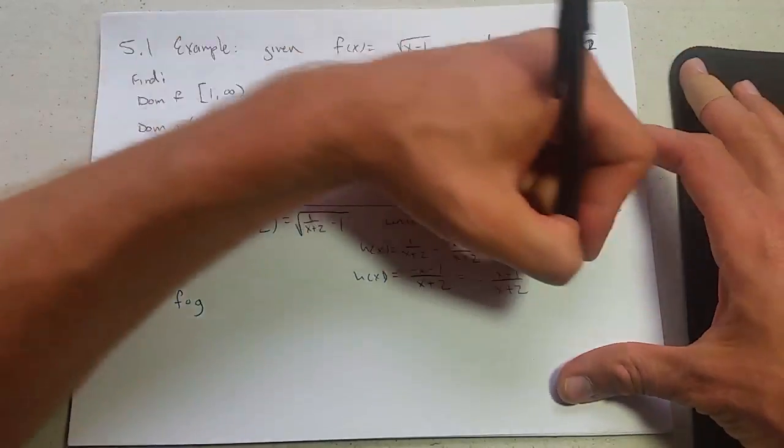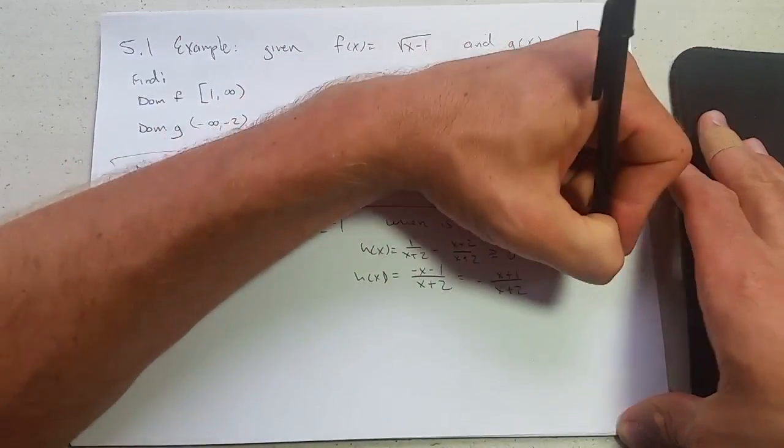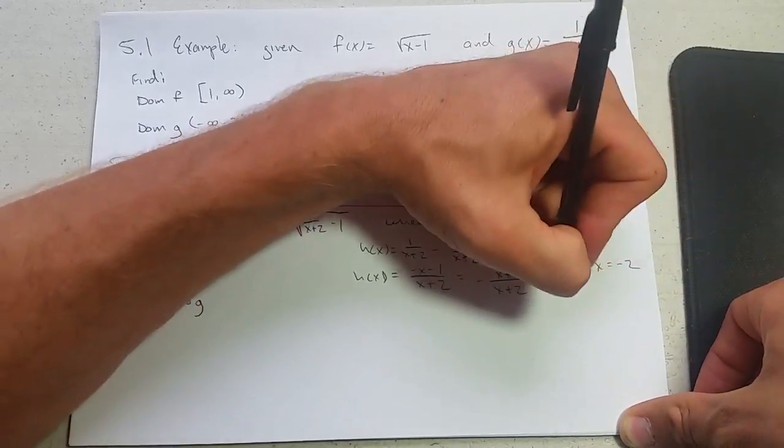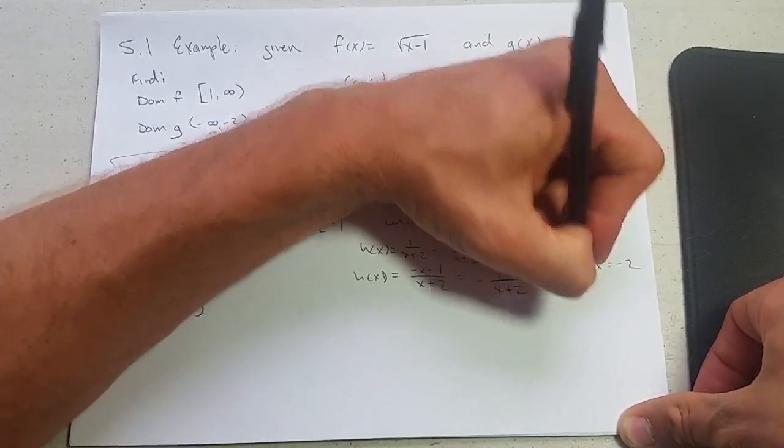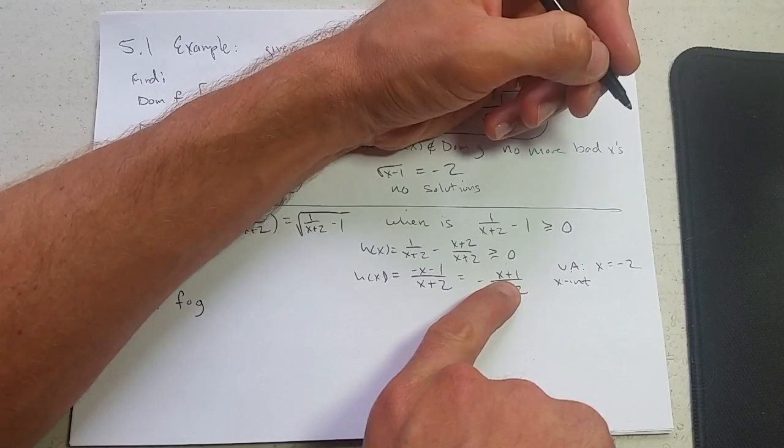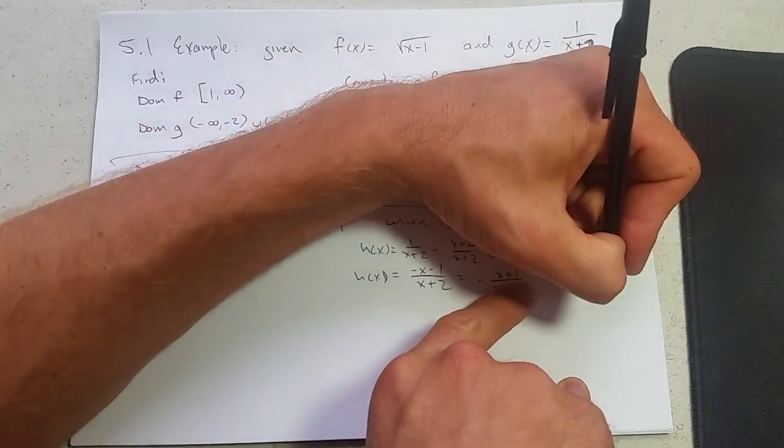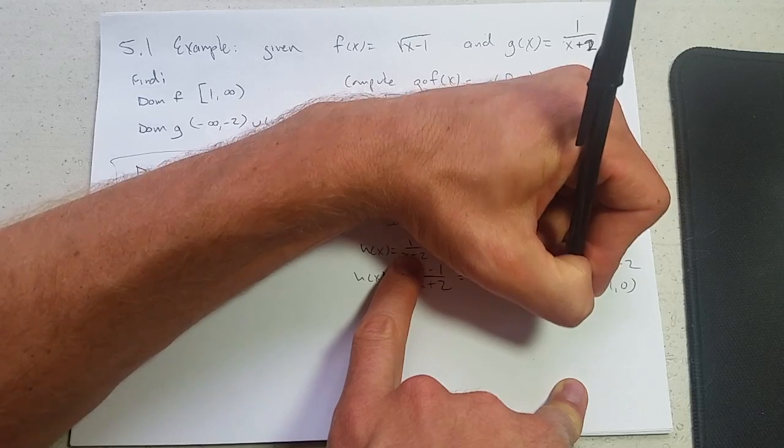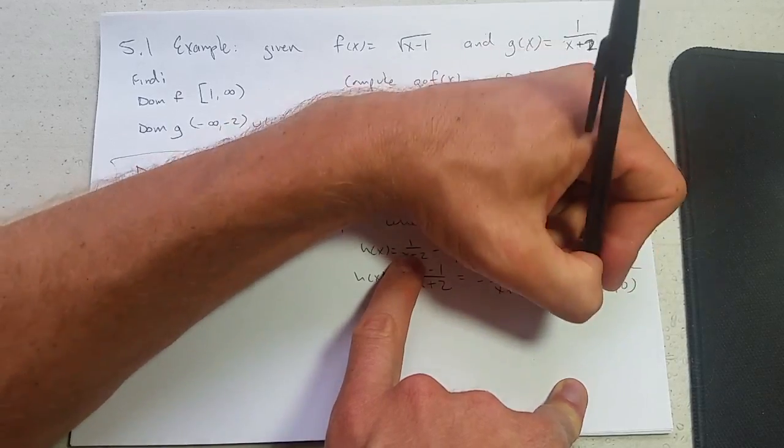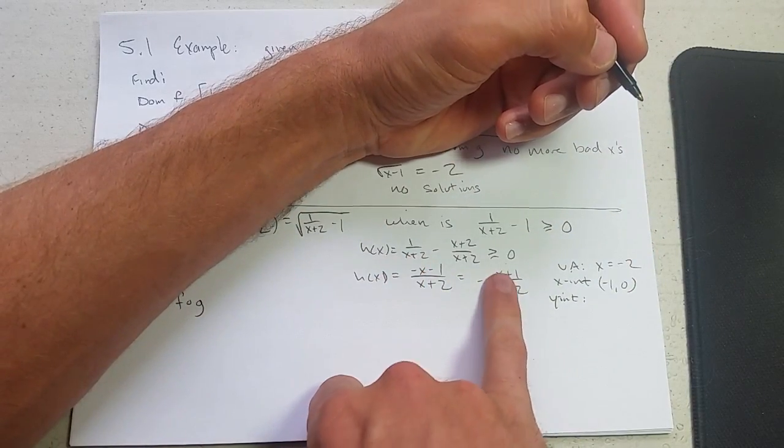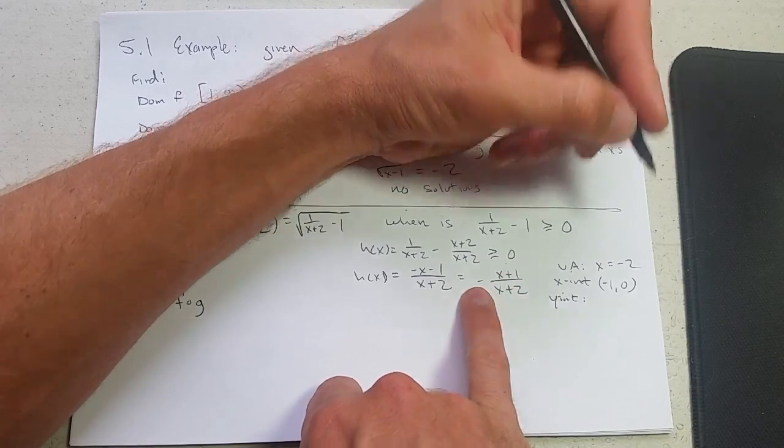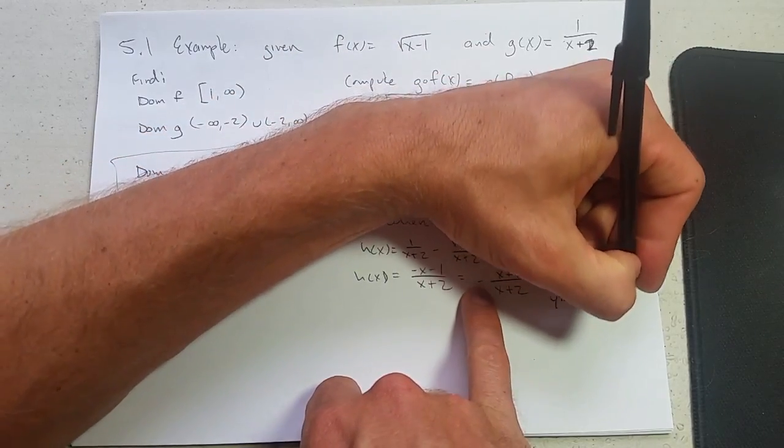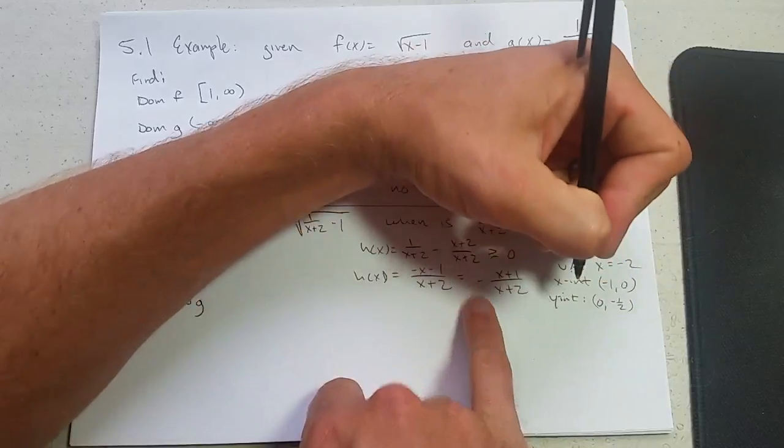Now I'm going to very quickly graph this. We have an x-intercept, an asymptote, a vertical asymptote. x equals negative 2. x-intercept. What x value makes this 0? Negative 1. Y-intercept. We've got 1 over 2, but negative.